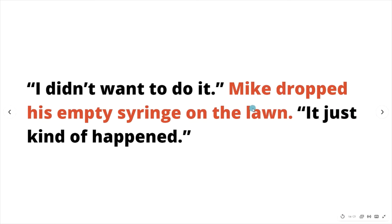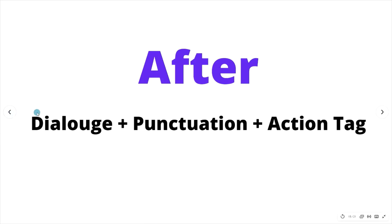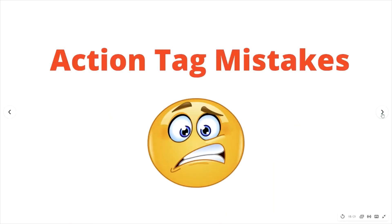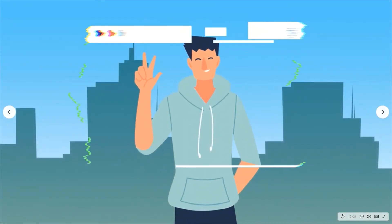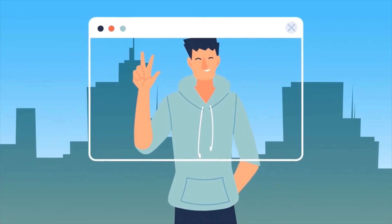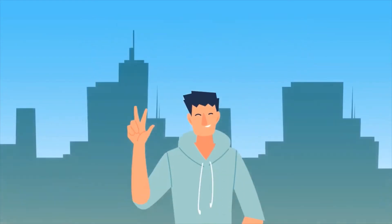You can also put the action tag after the dialogue — dialogue, some punctuation like a comma or period, and then the action. For example: 'Go. I don't want you here anymore.' His eyes returned to the dark screen of the TV. The main thing to always think about with action tags is the reader's experience — ultimately, how the reader experiences the scene, the sentence, and the dialogue matters most.